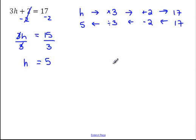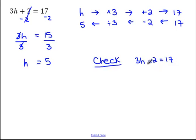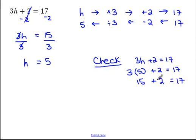The last thing you should do when solving equations is always check to see that your solution is correct. Our original equation was 3h plus 2 is equal to 17, and I got a solution of h equals 5, so I'm going to substitute that in. 3 times 5 plus 2 is equal to 17. 3 times 5 is 15, add 2 — 15 add 2 is 17. The left-hand side equals the right-hand side, so I know I've done my work correctly.